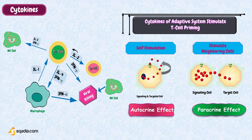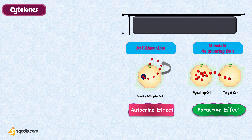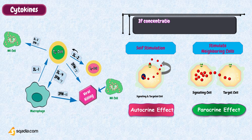For example, interleukin-2, secreted by activated T cells, has potent effects that induce T cell proliferation. Most of these effects are mediated on the cell that is secreting interleukin-2. If interleukin-2 were secreted at high levels, it might activate cells that were not recognizing specific antigen. Because of the low level of secretion, however, adaptive immune system cytokines are almost impossible to detect in fresh blood samples.